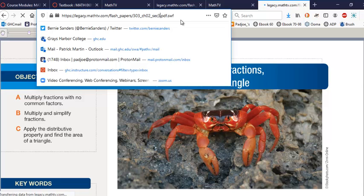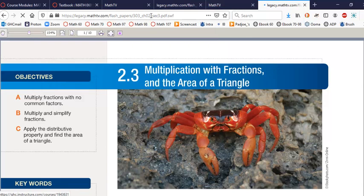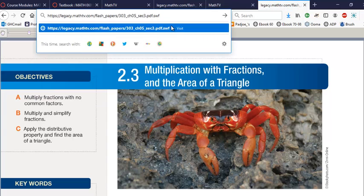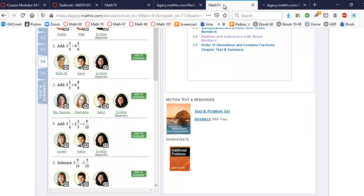If I want to change that. Oh, there. There's 2.3. If I want to change that to chapter 5, section 1. I just do that. And I press enter. And there we go. Right?